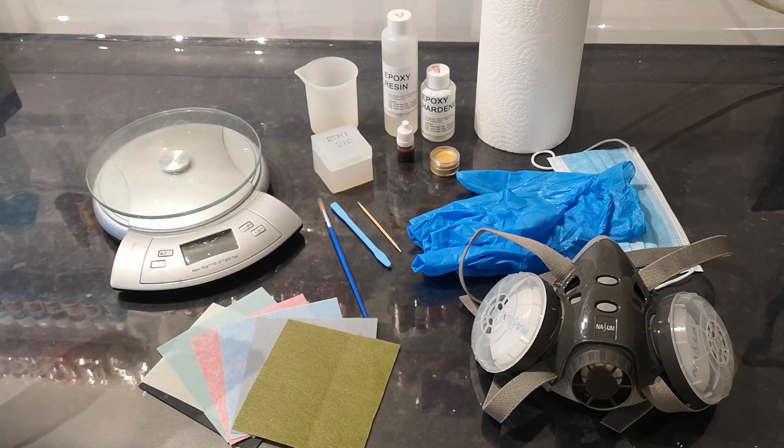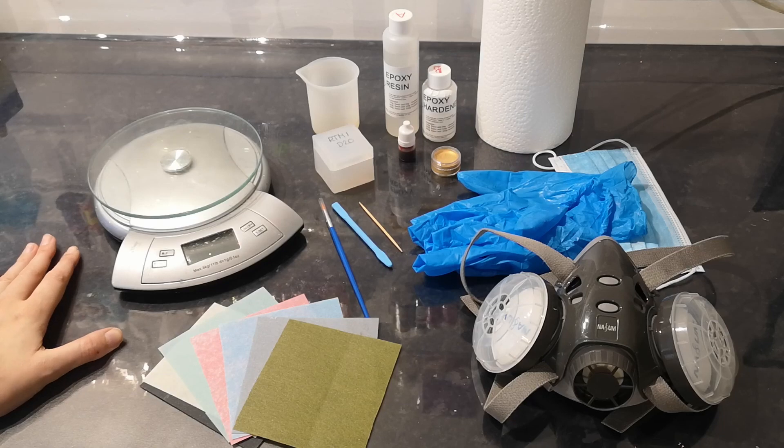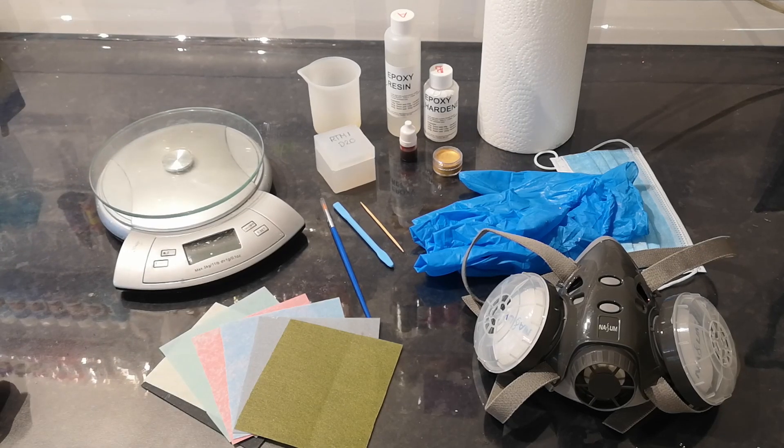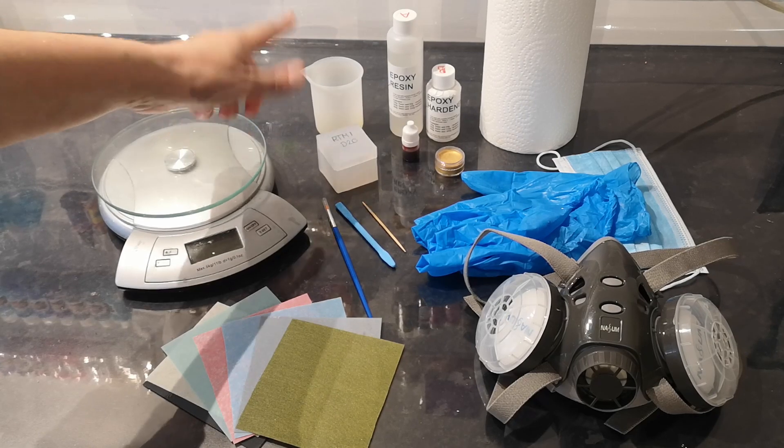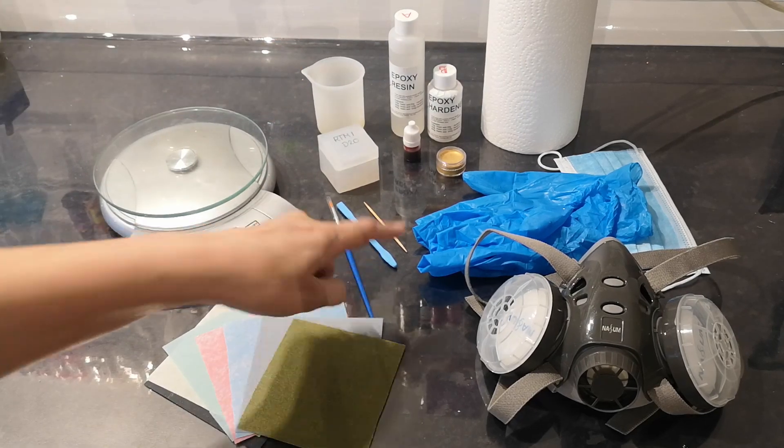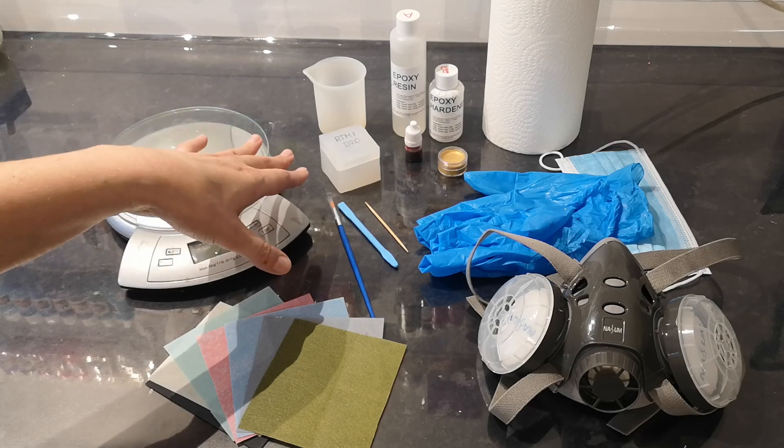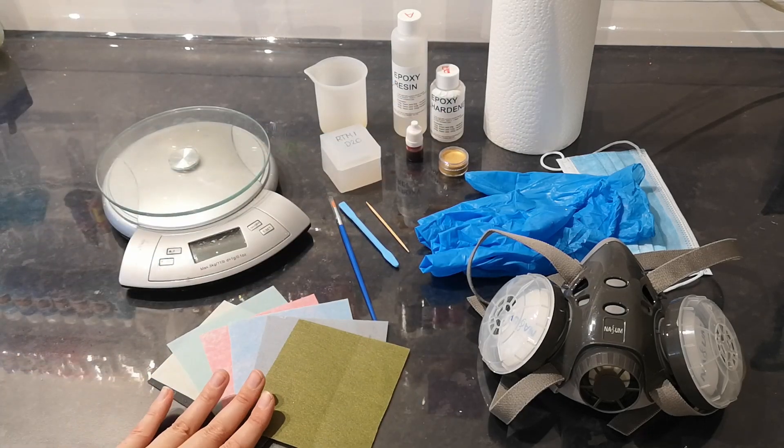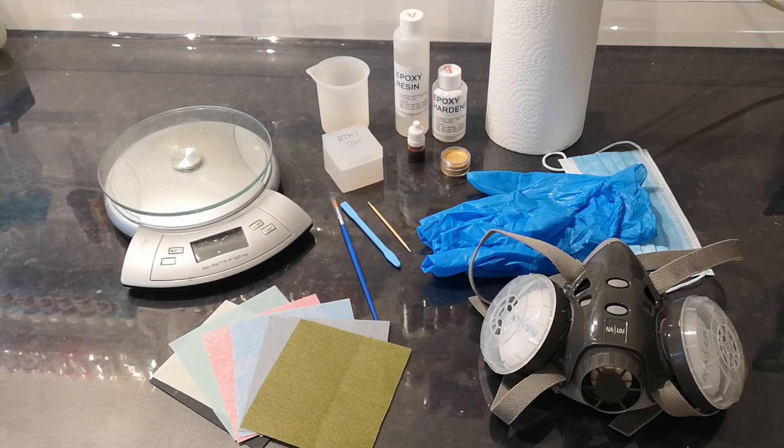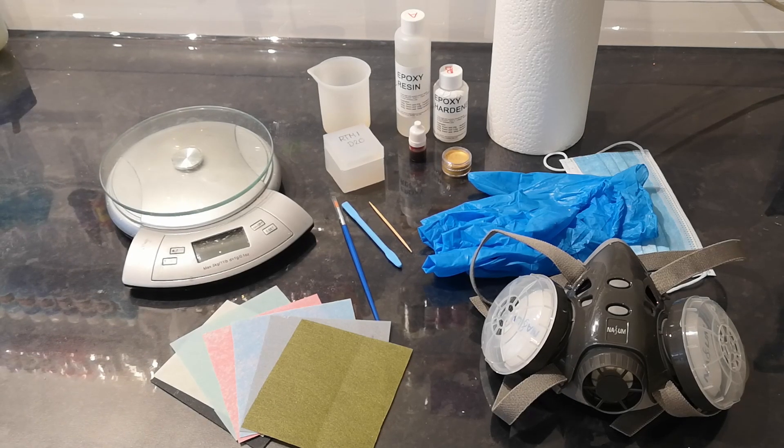We're going to need a set of scales to measure our epoxy. We're going to need the epoxy itself, something to mix it in, so we've got a silicone mixer cup because this is going to be reusable and a silicone stirrer. I've got my mold, paint and a paintbrush to finish it off, and some abrasive papers to get it to the point where it's all nice and shiny at the end.